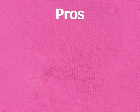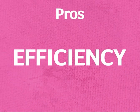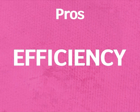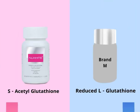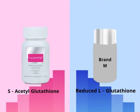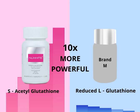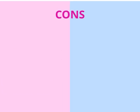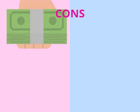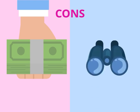The pros of S-acetyl glutathione are its efficiency. Recent clinical studies prove that S-acetyl glutathione is 10 times more powerful than reduced L-glutathione, so 200 mg of S-acetyl glutathione is equivalent to 2,000 mg of reduced glutathione. Its con is that it is expensive and hard to find.